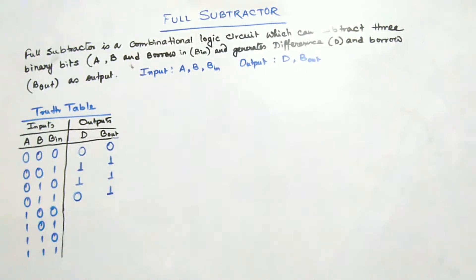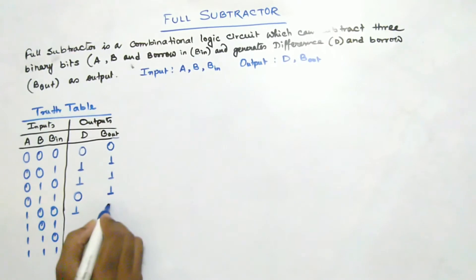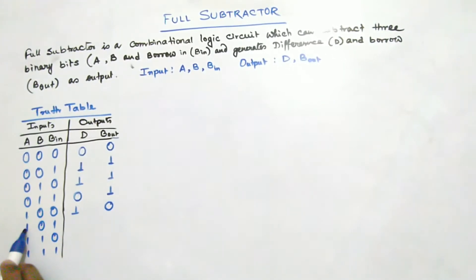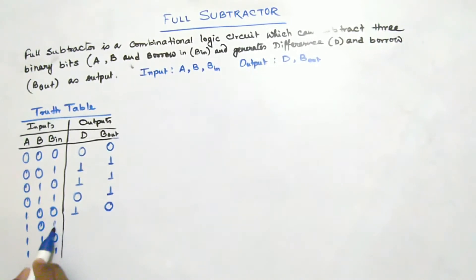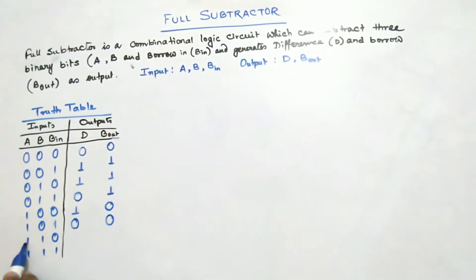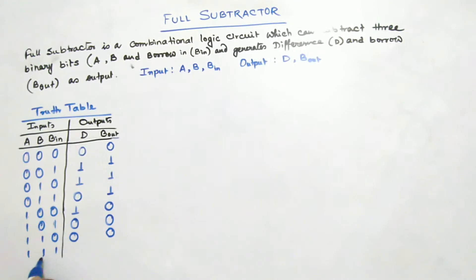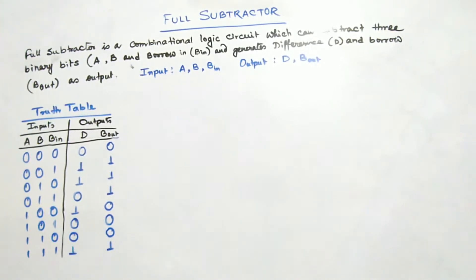In the next case, subtracting 0 from 1 gives 1, and 1 minus 0 again gives difference 1 with borrow out 0. Then, 1 minus 0 gives 1, and subtracting 1 from that gives 1 minus 1, so difference is 0. In the case where 1 minus 1 equals 0 and subtracting B in of 0: 0 minus 0 gives difference 0. In the last case, 1 minus 1 is 0, and 0 minus 1 gives difference 1 and borrow out 1.